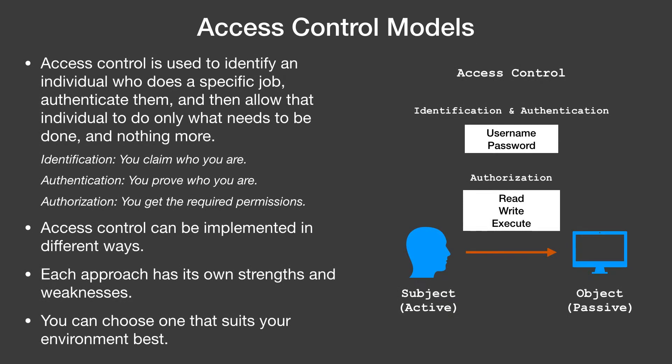Access control is used to identify an individual who does a specific job, authenticate them, and then allow that individual to do only what is required and nothing more. Think of a traffic police who stops you. You show him your driver's license — here you basically claim who you are, and that's identification. Then he makes a call to the traffic control room and confirms your identity using your license number and other details such as your name or date of birth — that's authentication. And now he knows that you are driving the right vehicle, not anything you are not allowed to — and that's authorization.